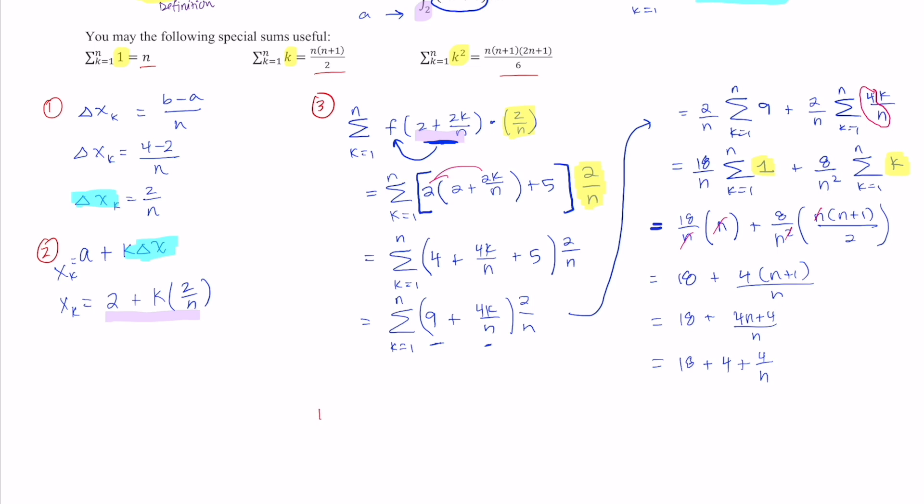Step four is going to be putting this whole process together of the definite integral to the Riemann sum and the limits. So the definite integral from 2 to 4 of 2x plus 5 with respect to x is equal to the limit as n approaches infinity of the result that you just got. So 18 plus 4, that's 22 plus 4 over n. Well using your limit definitions, if we divide by a really large number, 4 divided by a really large number is going to approach 0. So that means that this limit is just equal to 22, and that would be your final answer.